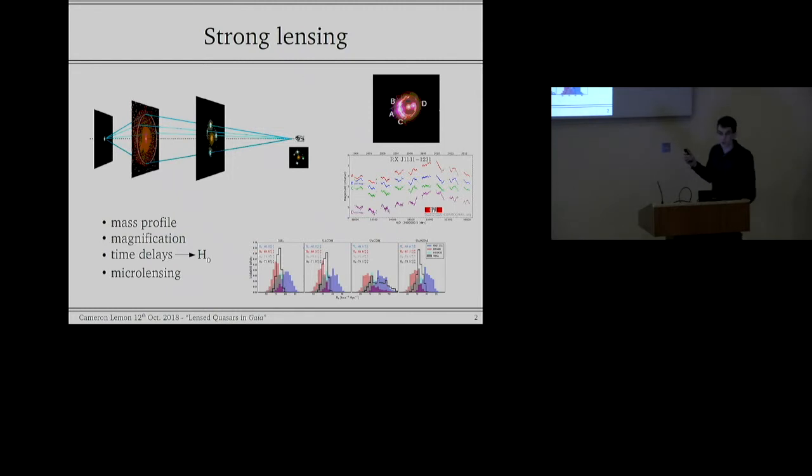You can also do some cosmology with lensed quasars. That's because the sources are variable. And so if you monitor each of the images of a lensed quasar, as has been done for RXJ 1131 ABC and D here, they all vary exactly the same way because they're the same source. However, the light paths from source to observer are slightly different lengths, and this manifests itself in a time delay. This time delay depends on the actual geometry of the lensing potential, but it also depends on the Hubble constant.